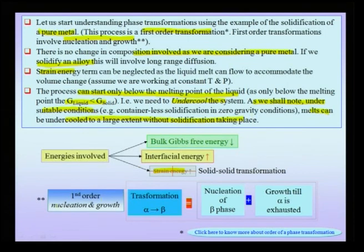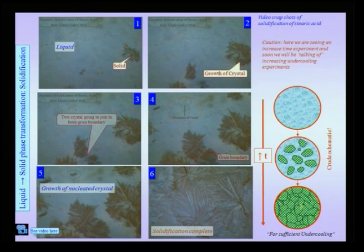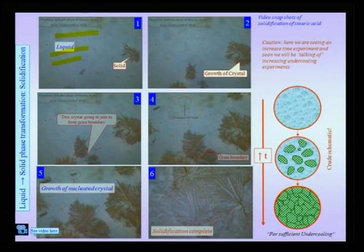The nucleation and growth process involves, for an alpha to beta or a liquid to solid phase transformation, nucleation of the solid phase and growth of that phase until the parent phase is exhausted — completing the transformation. To understand this process, let us observe the solidification of stearic acid from an undercooled melt. Initially there is a liquid pool, and in this liquid pool you will notice small regions of crystalline phase forming.